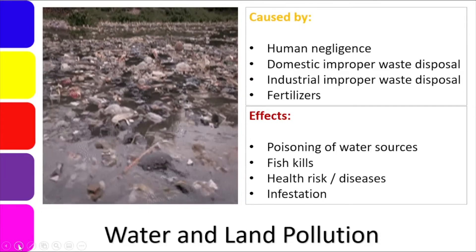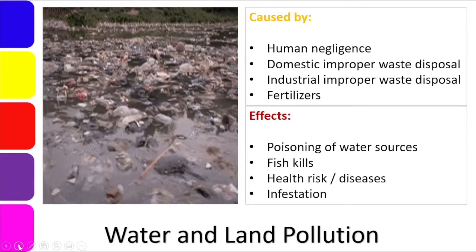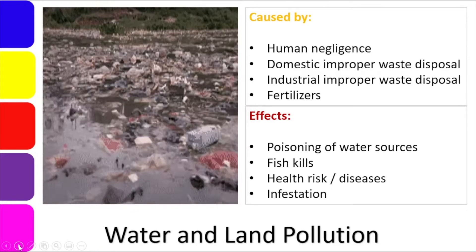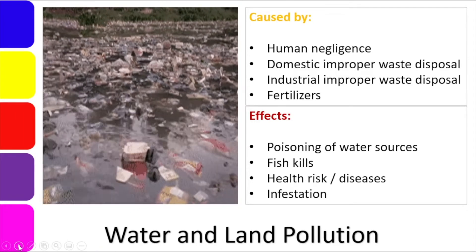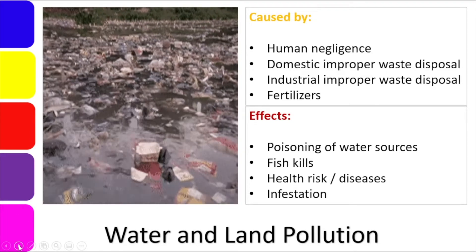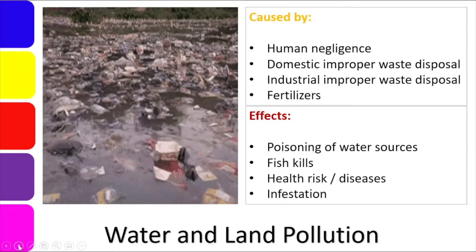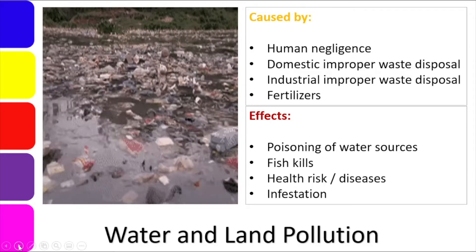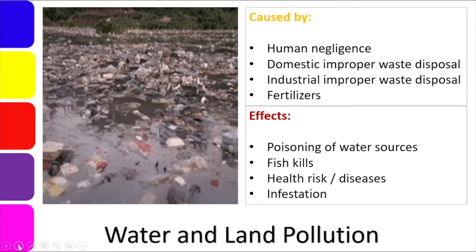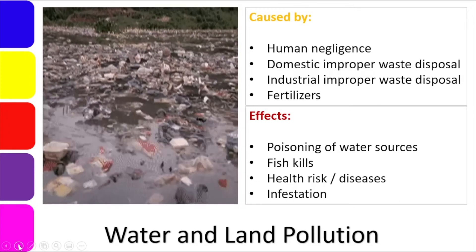The effects of water and land pollution are: poisoning of water sources, which results in fish kills or the death of marine animals — especially the fish we catch for food; health risks or diseases that we can contract; and infestation, meaning the spread of pests. The increase of pests such as rats, cockroaches, and flies can also cause harm and diseases to us.